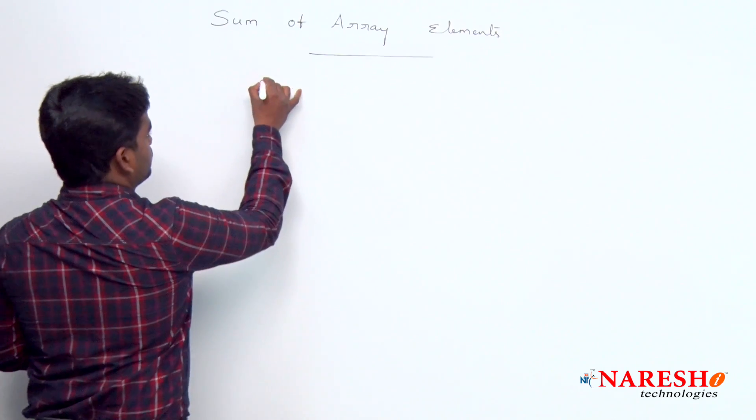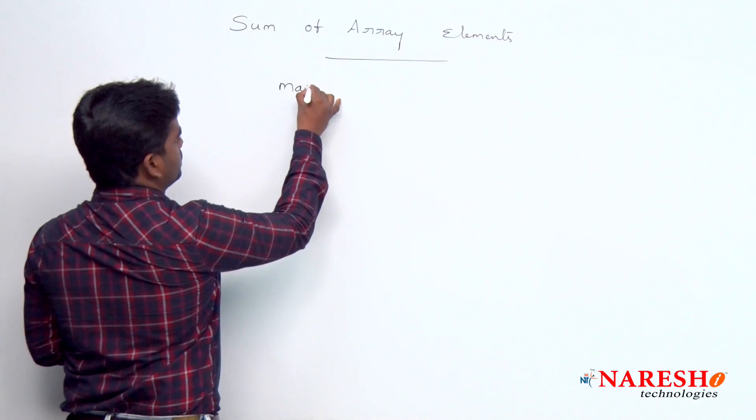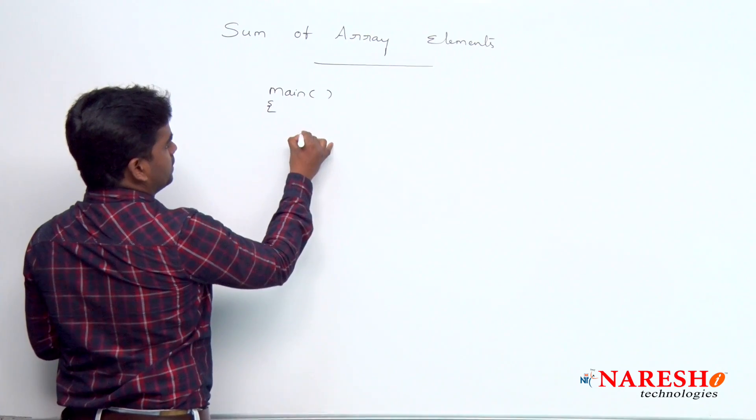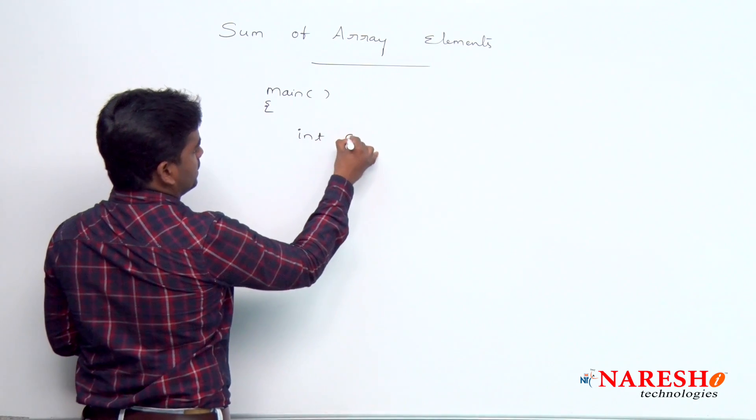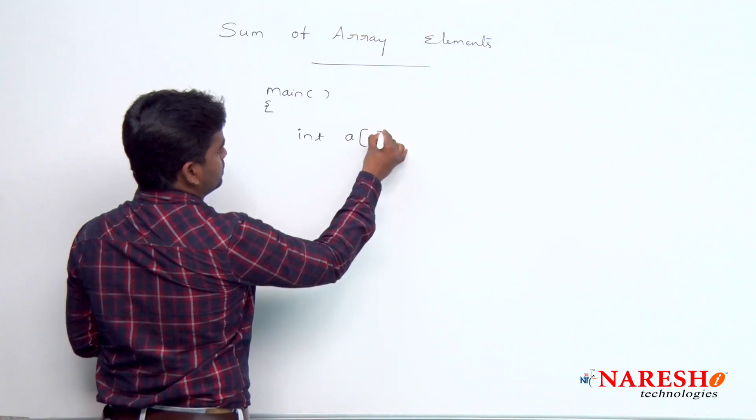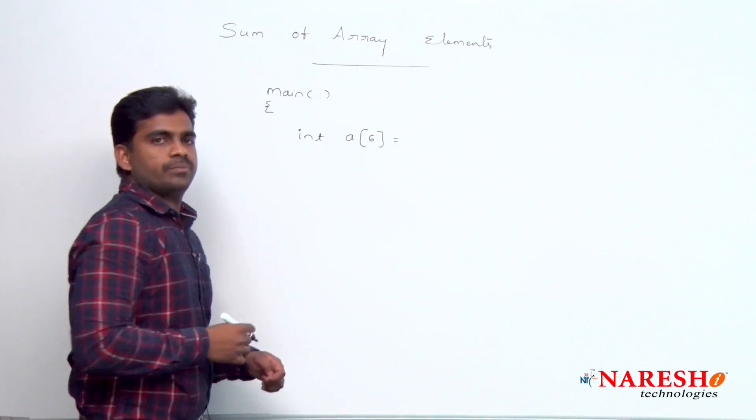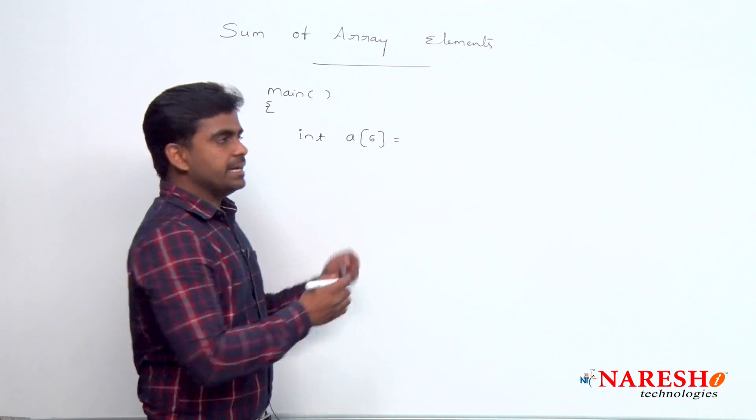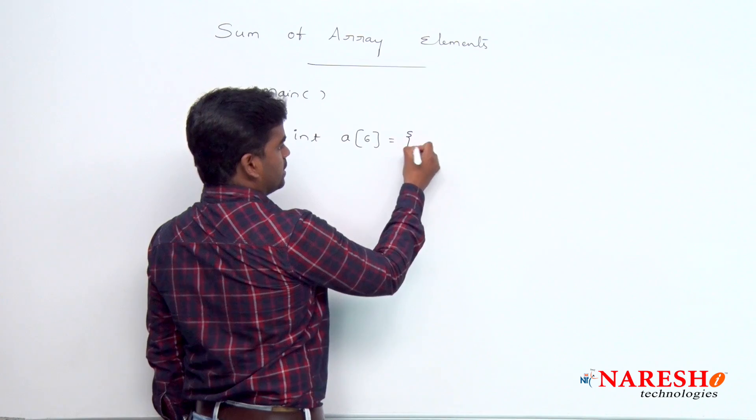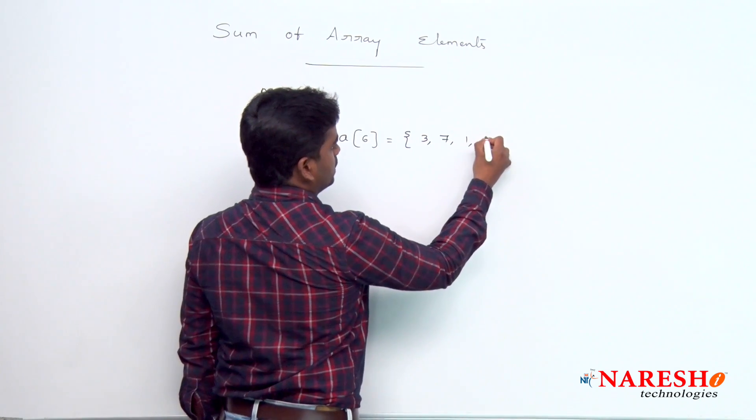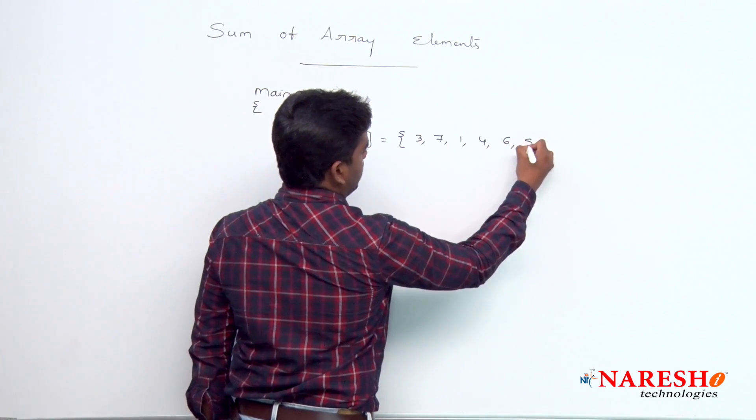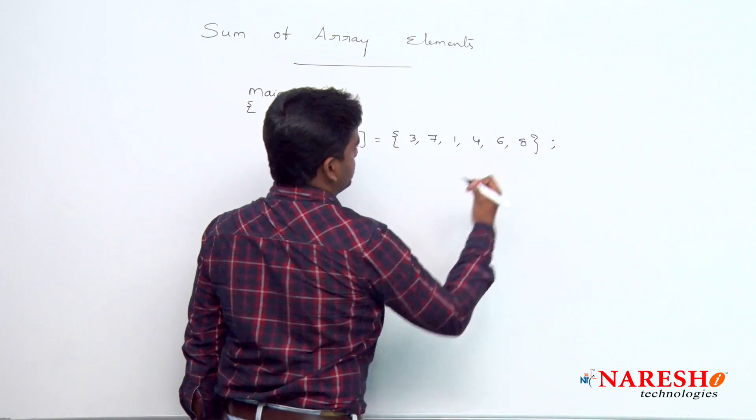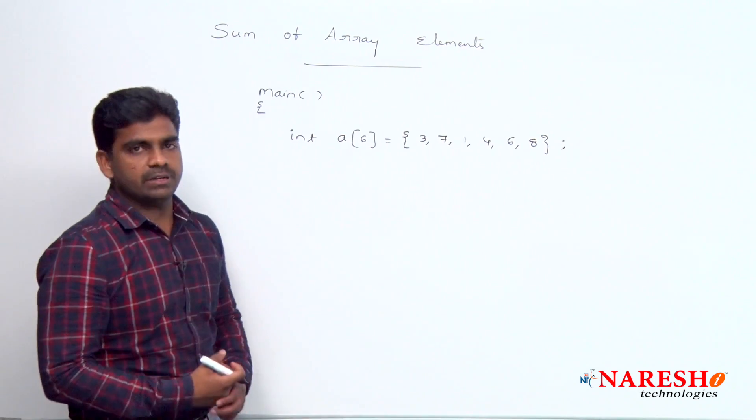Here program execution starts with the main function. We are taking one array, any size, for example size is 6, and we can initialize the array directly in this way. For example, 3, 7, 1, 4, 6, 8, these elements we are taking.